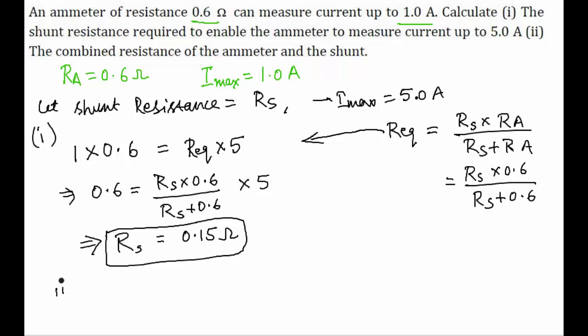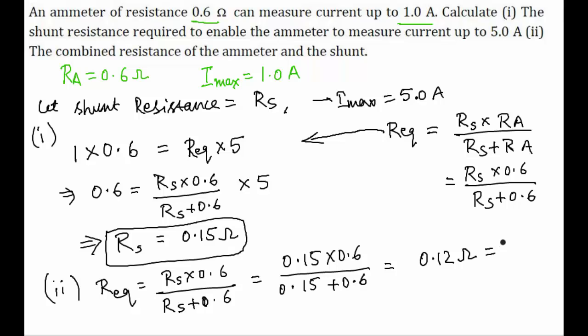In the second part it is asking to find the value of R combined that is the combined resistance. Combined resistance is R equivalent that is Rs into 0.6 by Rs plus 0.6. We have the value of Rs as 0.15 into 0.6 by 0.15 plus 0.6, and after solving this we get it to be 0.12 ohm. This is the answer for the R combined which is asked in the second part.